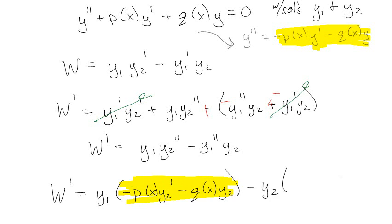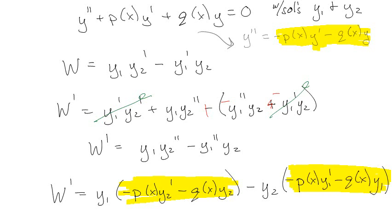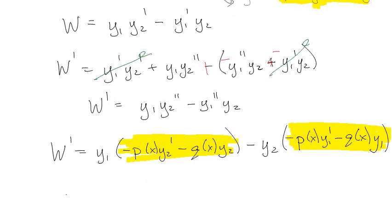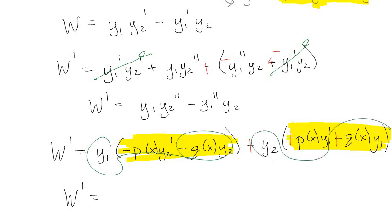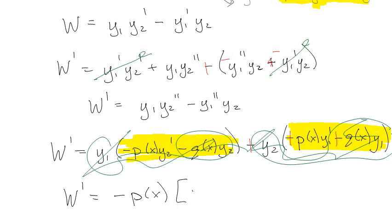Then minus Y2 times Y1'', where Y1'' is the same formula with Y1's: negative P(x)·Y1' minus Q(x)·Y1. We distribute everything out. The Q(x) terms cancel — we get plus Y1·Q(x)·Y2 and minus Y1·Q(x)·Y2 — so those go away. We end up with negative P(x) times the quantity Y1·Y2' minus Y1'·Y2.